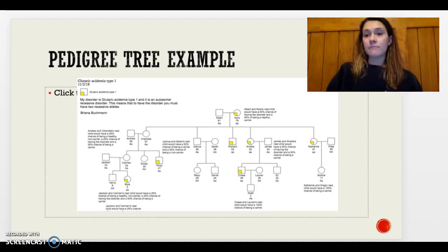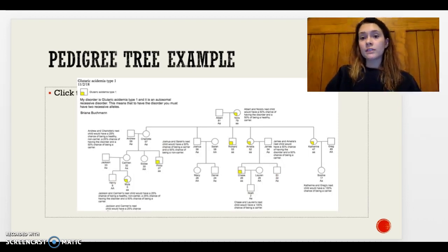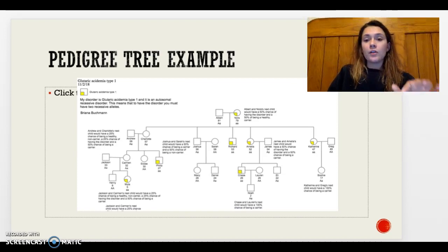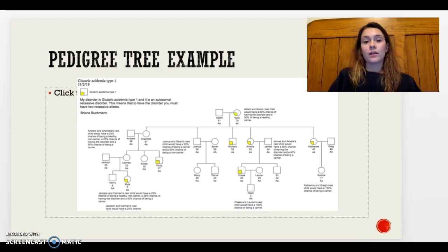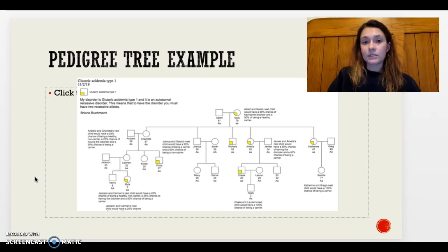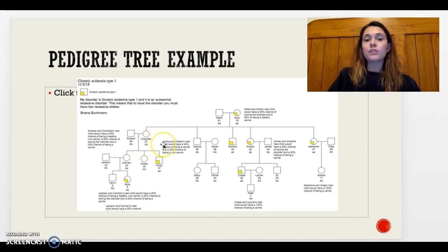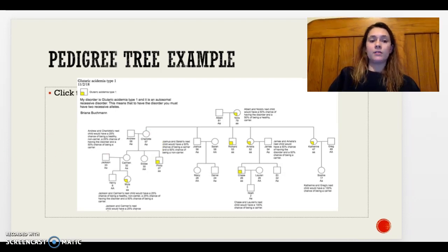This is a pedigree tree that demonstrates autosomal recessive inheritance. Yellow squares represent individuals with the disorder. In the first generation, you can see Nora, the mother, has the disorder, which results in some of her children having the disorder and some not. An example of parents not having the disorder but a child presenting with it is Charlotte in the upper left corner — she must be a carrier because one of her children presents with the disorder.